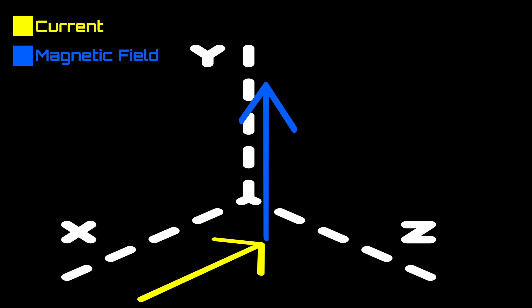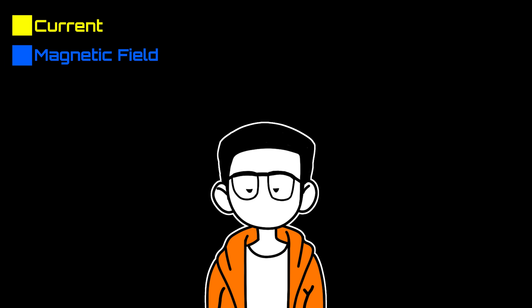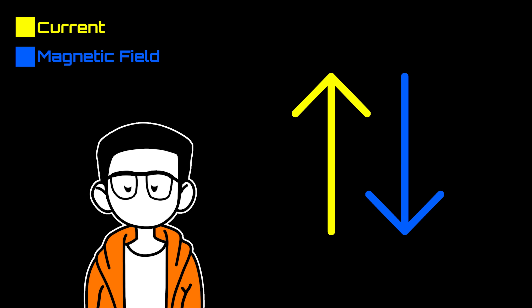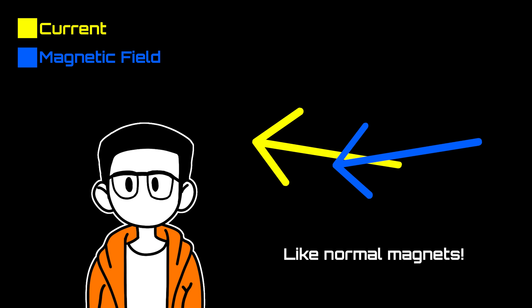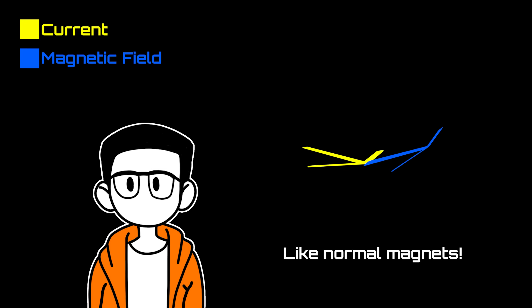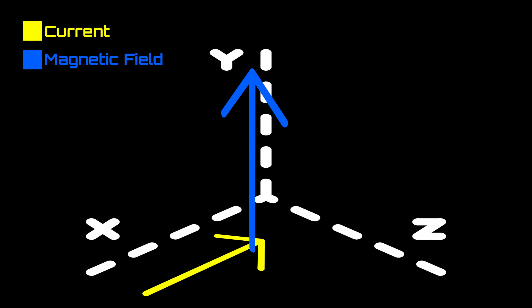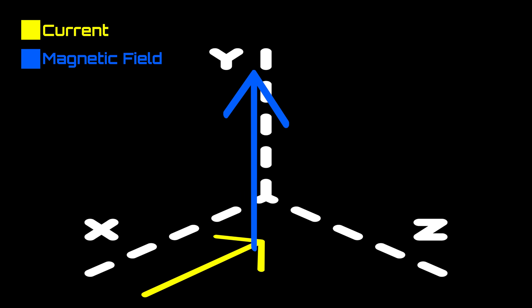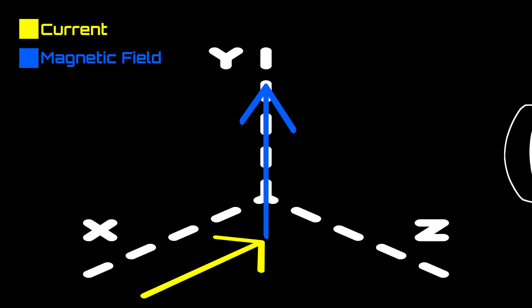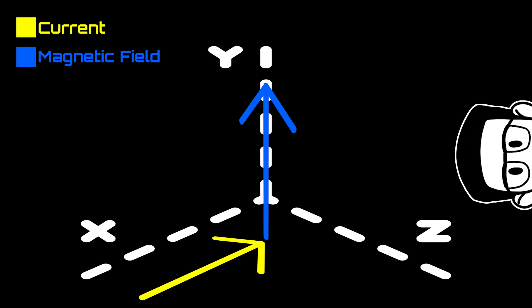The magnetic field generated by the current wants to line up with the magnetic field already present. Well, not line up per se, but for all intents and purposes we could kind of think of it like that, though it's more of an attract and repel sort of situation. So what happens when they come into contact? They generate a Lorentz force in a direction perpendicular to where they both meet.